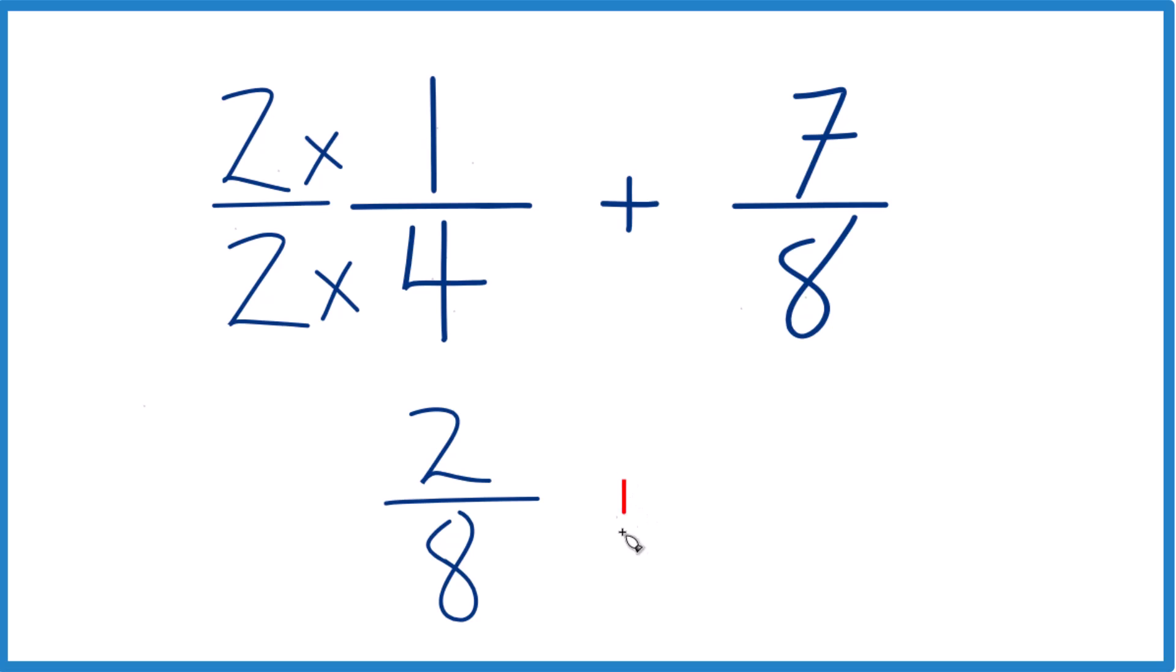But we have our 7 eighths here, and because we have this same denominator, we just bring the denominator across and add the numerators. 2 plus 7, that equals 9. So 1 fourth plus 7 eighths equals 9 eighths.